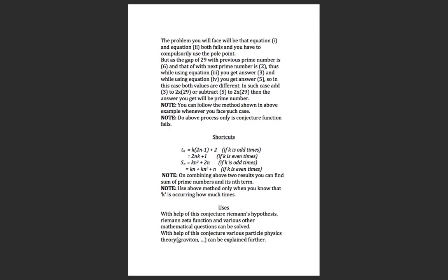Here on the screen are some shortcuts to find the tn and sn terms. If k is odd times, use tn equals k times 2n minus 1 plus 2. If k is even times, use k times 2n and k plus 1. For sn: if k is odd times, sn equals kn squared plus 2; if k is even times, sn equals kn plus kn squared plus n. Note that combining these two equations, you must know how many times k is occurring.